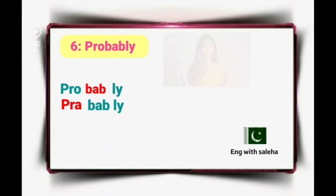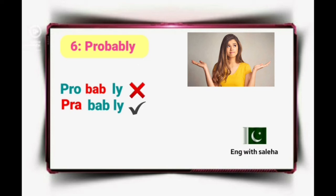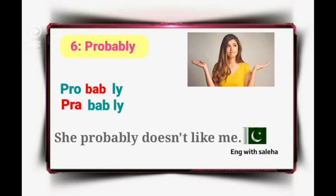Number 6: Probably. It's not 'probably' — don't stress the second part 'bab'. Do stress the first part 'pro': it's 'probably'. Example sentence: She probably doesn't like me.